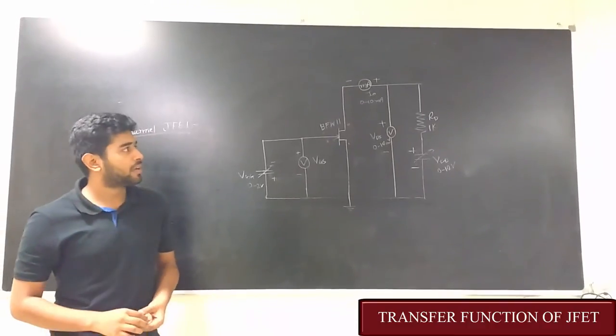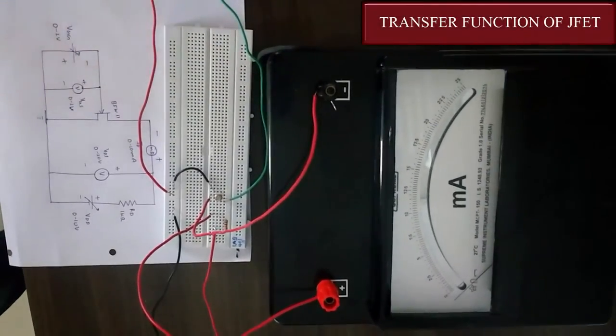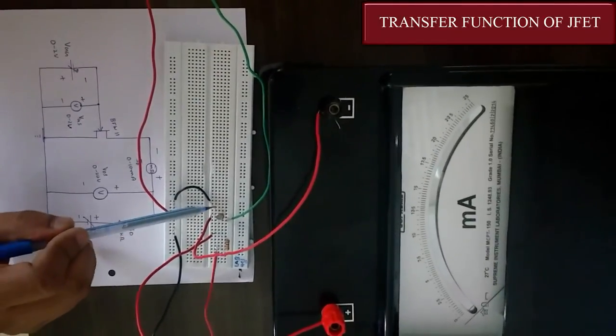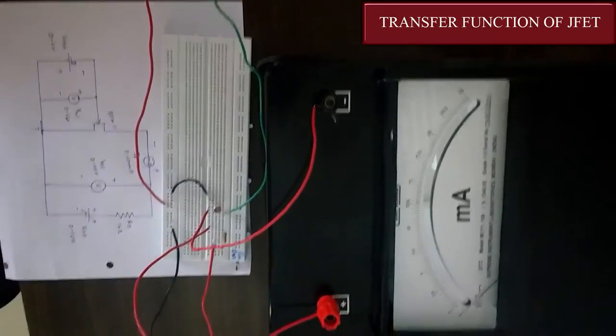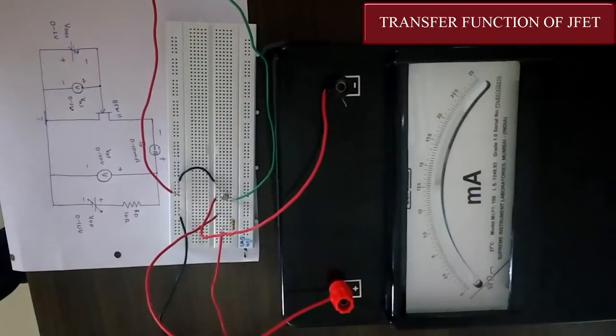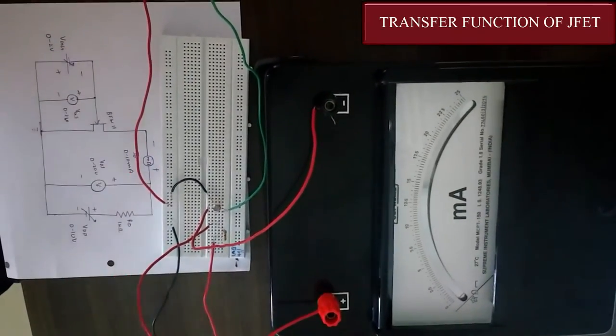This is how the circuit is implemented on breadboard. The JFET used here is BFW11. This is the drain, source, and gate of the JFET. This milliammeter gives us the ID current. These terminals are for the VDD power supply and these terminals are for the VGG power supply.